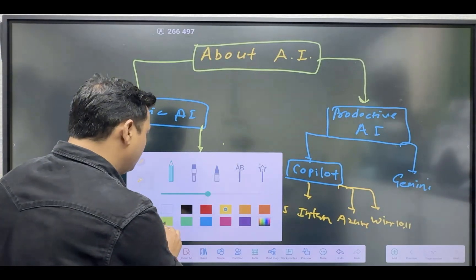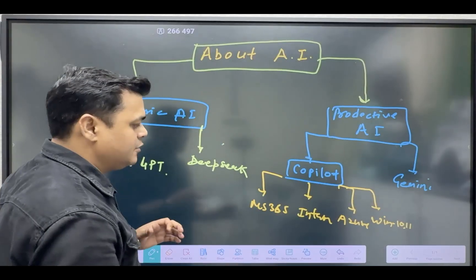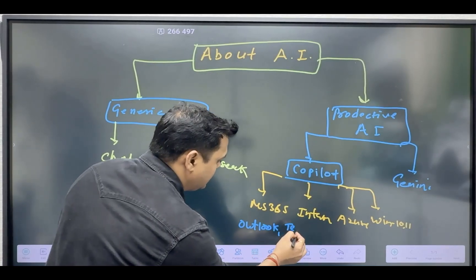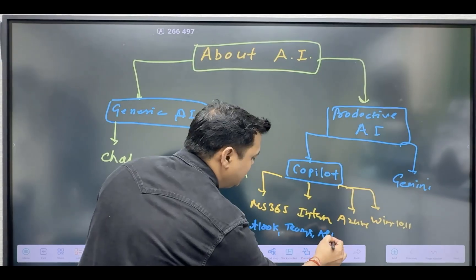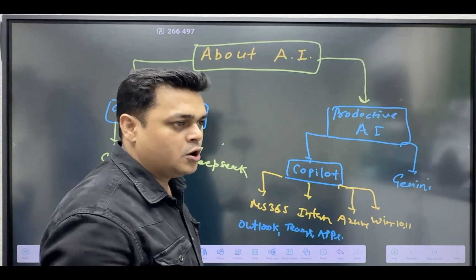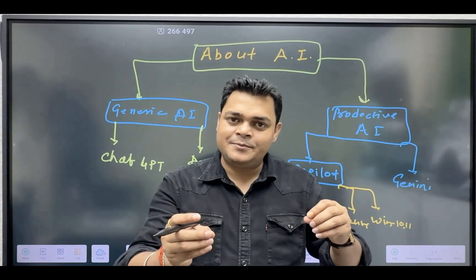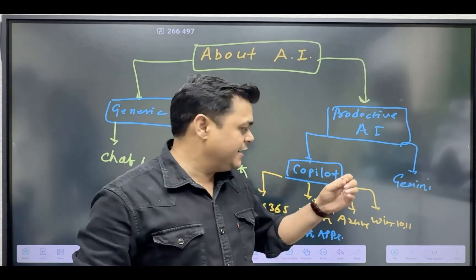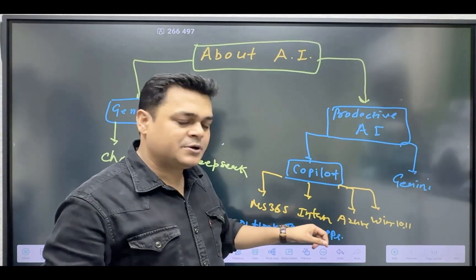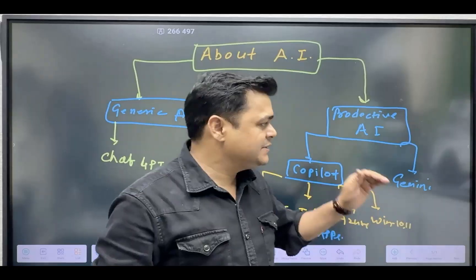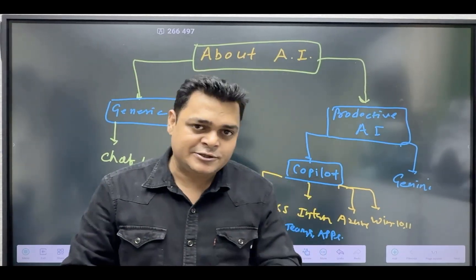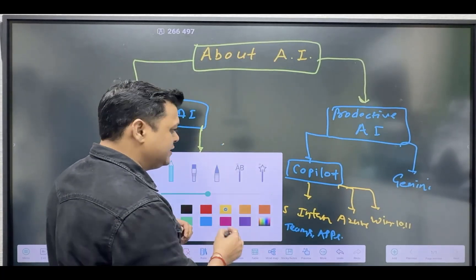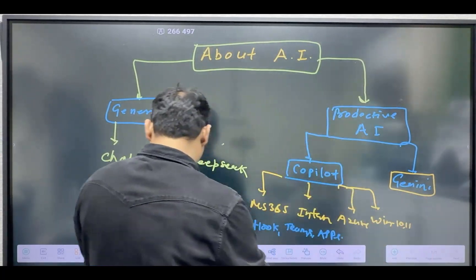Apart from these portals, you can also utilize AI features for daily tasks. We use Outlook and Microsoft Teams on a daily basis, and all Microsoft 365 applications — Word, Excel, PowerPoint, OneNote — AI is integrated with all these products. I'll guide you on how to use AI Copilot with Microsoft Teams, Outlook, Word, Excel, and PowerPoint in upcoming sessions.